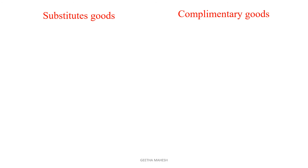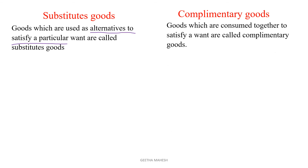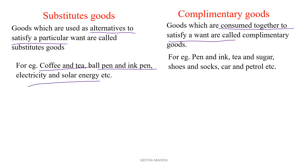Now let us discuss the differences between substitute goods and complementary goods. Substitute goods are those used as alternatives to satisfy a particular want, while complementary goods are consumed together to satisfy a particular want. Good examples of substitutes are coffee and tea, ballpen and ink pen, electricity or solar energy. Good examples of complementary goods are pen and ink, tea and sugar, shoes and socks.